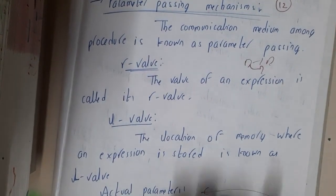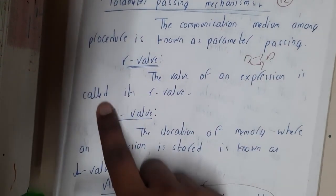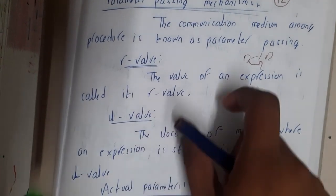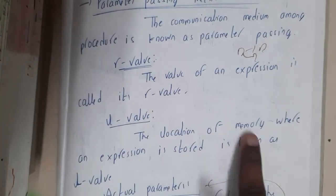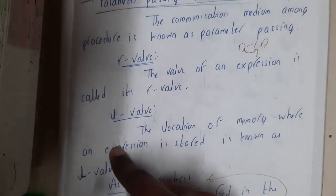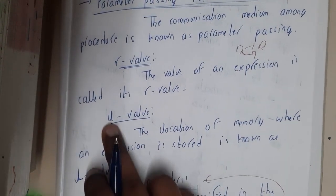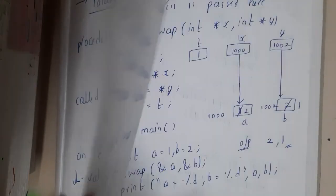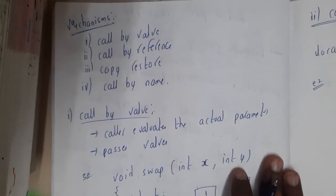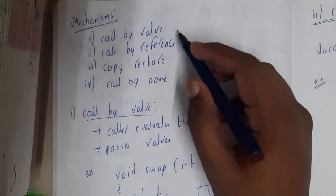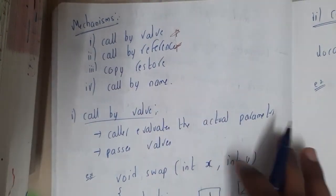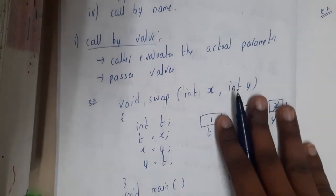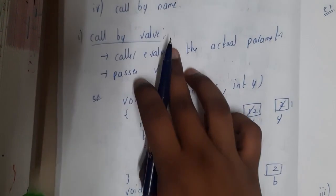Next, r-value and l-value. The value of an expression is called r-value, and the location of the memory where an expression is stored is called l-value. So location is l-value and value is r-value. Among the four popular mechanisms, call by value and call by reference are really commonly used, while copy restore and call by name are rarely used.